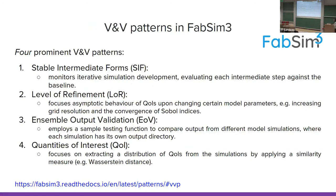In relation to VNV patterns in FabSim3, within the VECMA project we developed four different types of VNV patterns: stable intermediate forms, level of refinement, ensemble output validation, and quantity of interest distribution comparison. You can read more about this via the link provided. Presentations will also be available for your use.